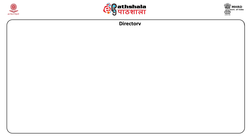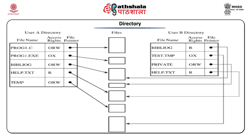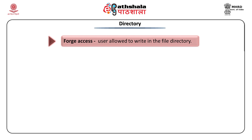The first object is the directory object. How is a directory protected? User A's directory has a list of which files are in the directory with their access rights, and then it contains file pointers to the actual physical locations where files are stored. For example, user A has a file named prog1.c with access rights ORW (open, read, write) and the file pointer points to the location of the file. Similarly, user B has access to a file called bblog with read-only access, and the file pointer points to the actual physical location. Files are stored in common storage, and users A and B may have access to the same file with different access rights. No user can be allowed to write in the file directory, because that would be a way to forge access to a file.